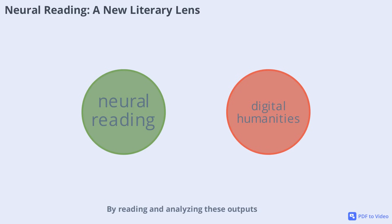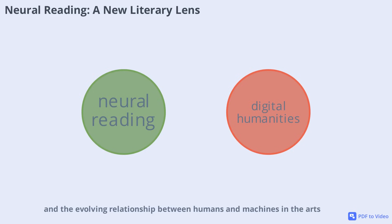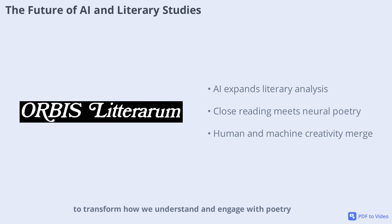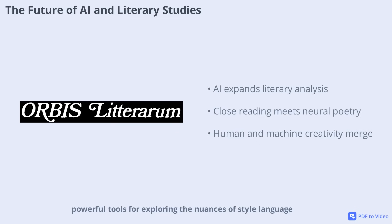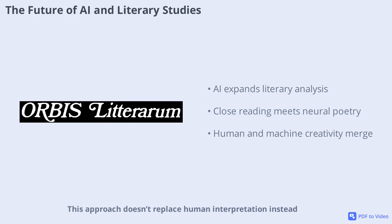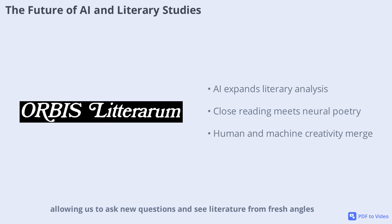By reading and analyzing these outputs, scholars gain fresh perspectives on literary style, authorship, and the evolving relationship between humans and machines in the arts. AI-generated texts are not just playful experiments — they're powerful tools for exploring the nuances of style, language, and creativity across vast literary landscapes. By combining close reading of neural poetry with traditional analysis, researchers can uncover patterns and stylistic features that might otherwise go unnoticed. This approach doesn't replace human interpretation; instead, it expands our toolkit, allowing us to ask new questions and see literature from fresh angles.